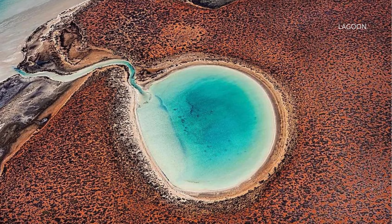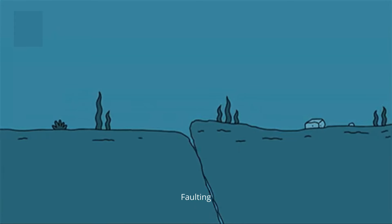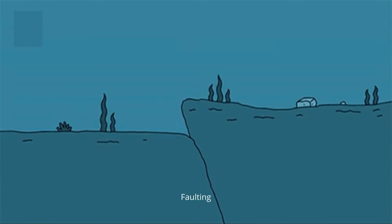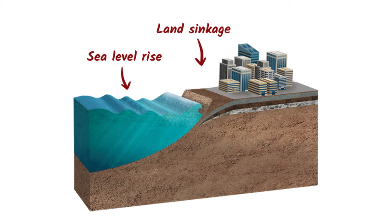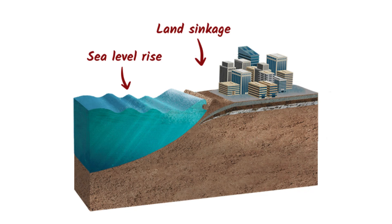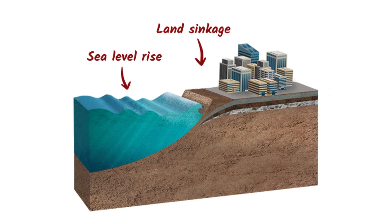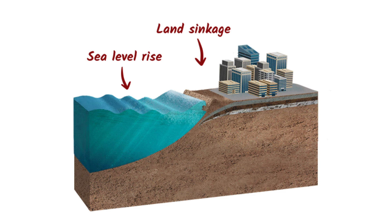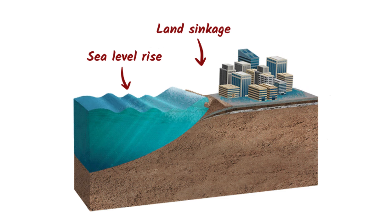The west coast of India is both emergent and submergent. The northern part, i.e. the Konkan coast, is submerged due to faulting. Submergent coastlines display characteristics caused when the sea level rises or the land sinks. Submergent coastlines contain estuaries, barrier reefs and barrier island systems.